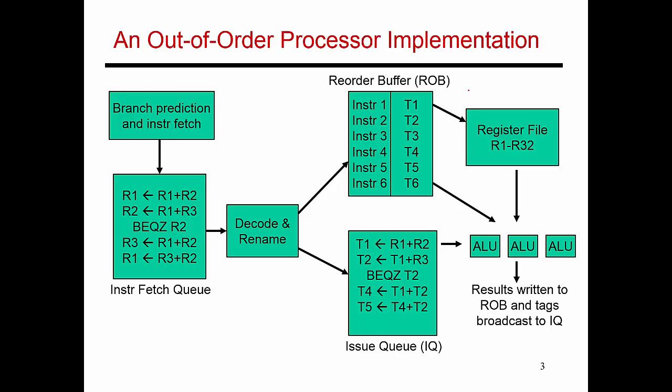In this design, the first thing that happens is branch prediction and instruction fetch. This is where I use a hardware sophisticated branch predictor, which has an accuracy of well over 90%, and it tells me exactly what instruction I'm likely to execute next. Once I've made that prediction, I go into my instruction memory unit and fetch as many instructions as I can — maybe four consecutive instructions — and those then get placed into what is called the instruction fetch queue.